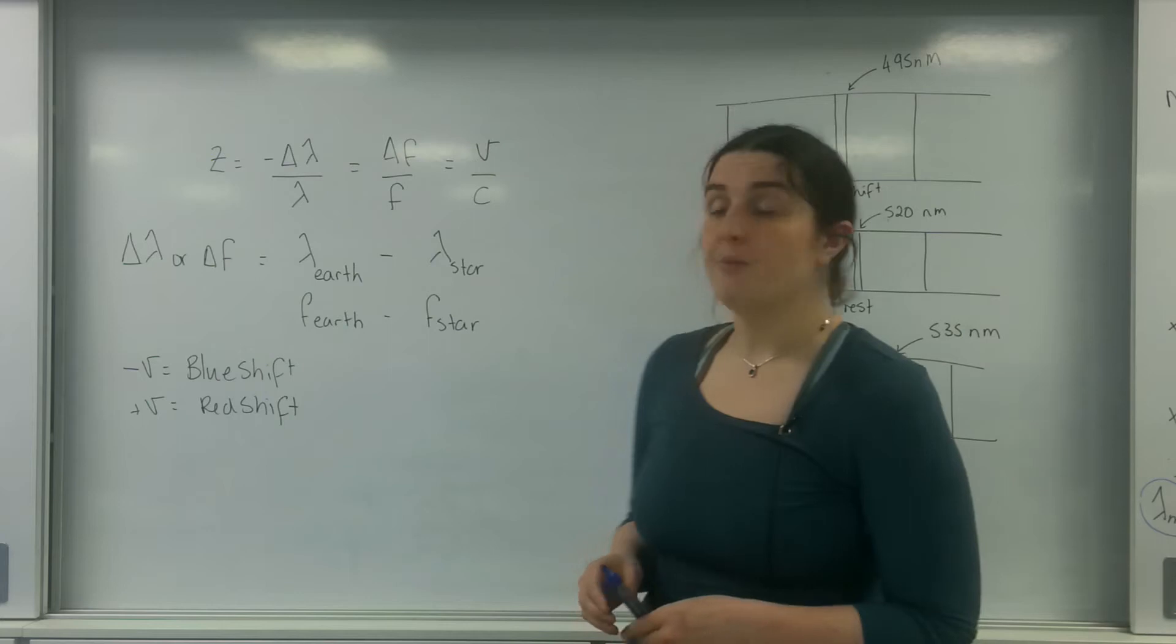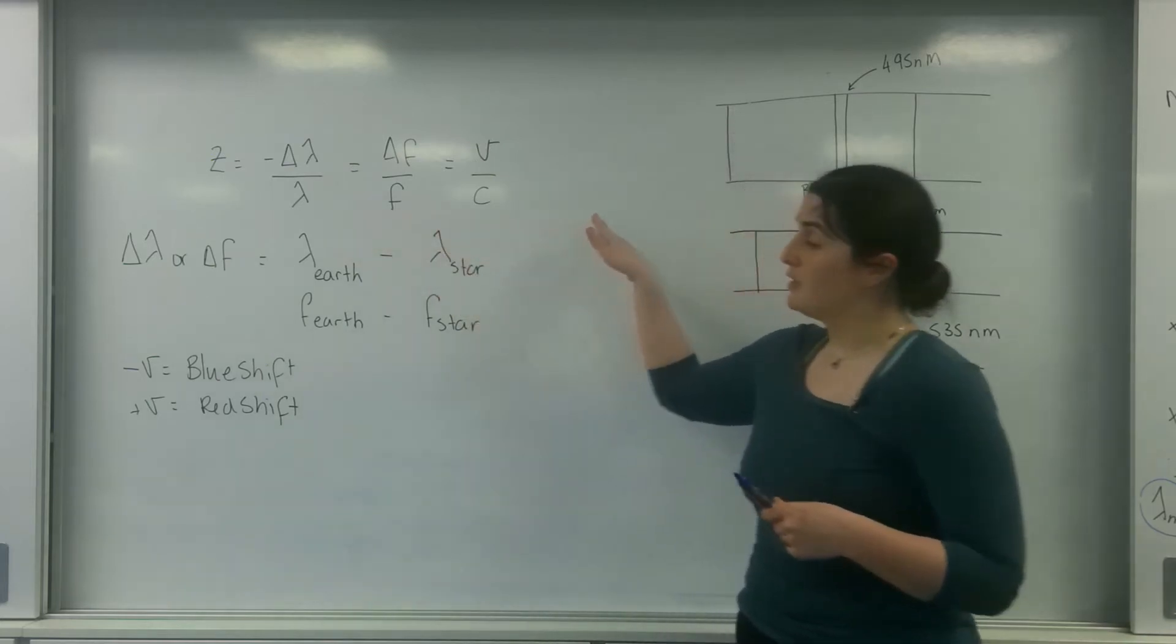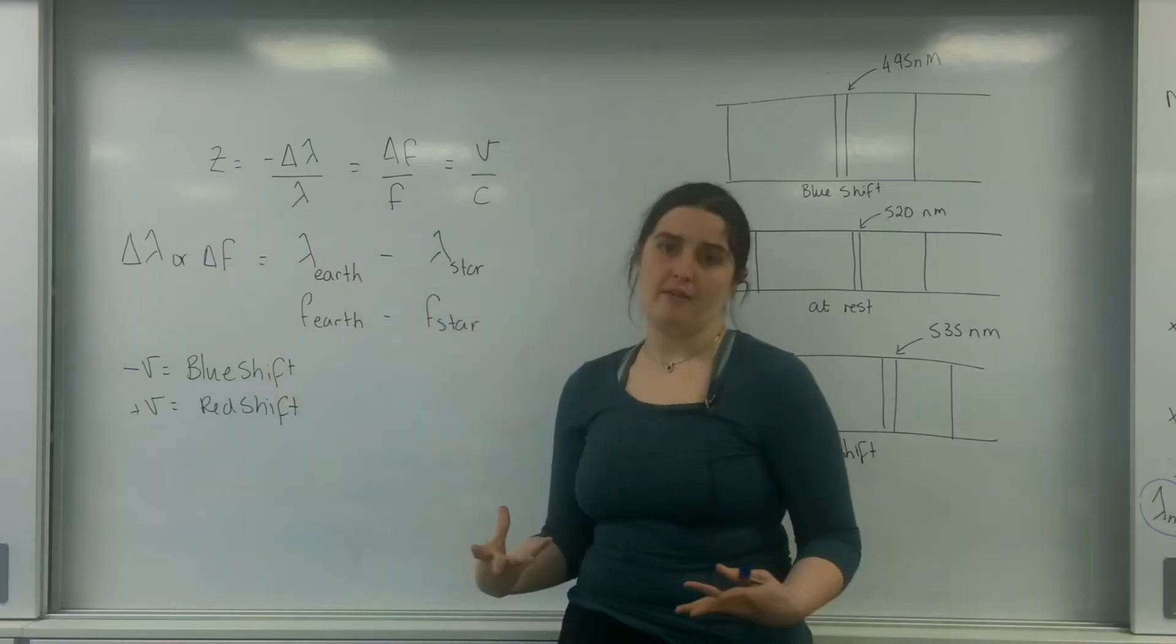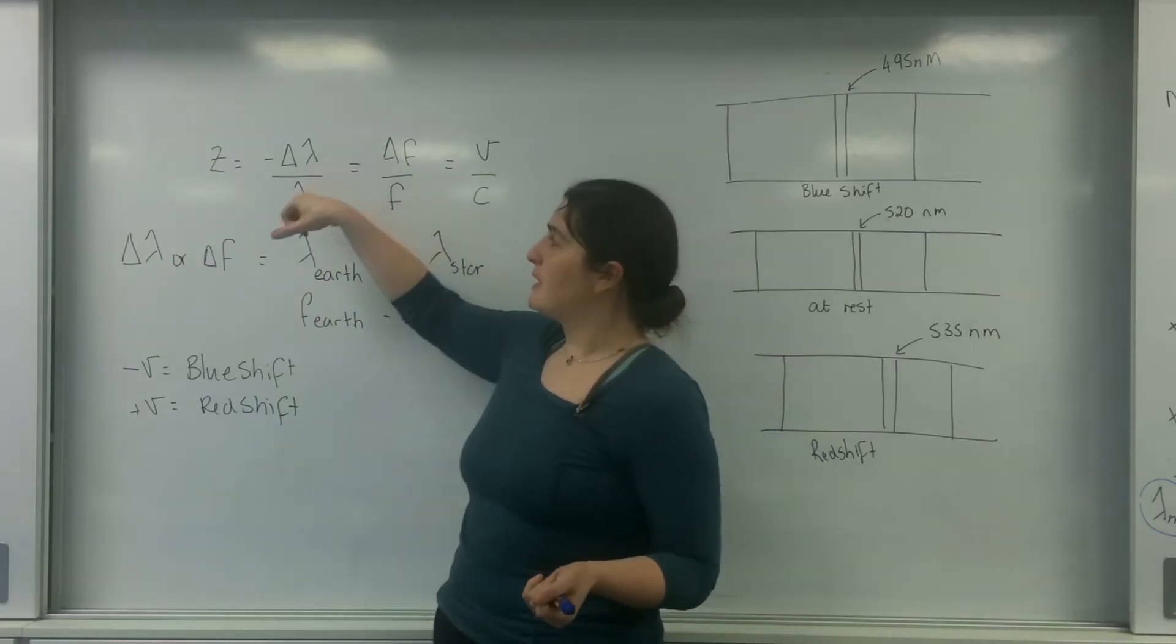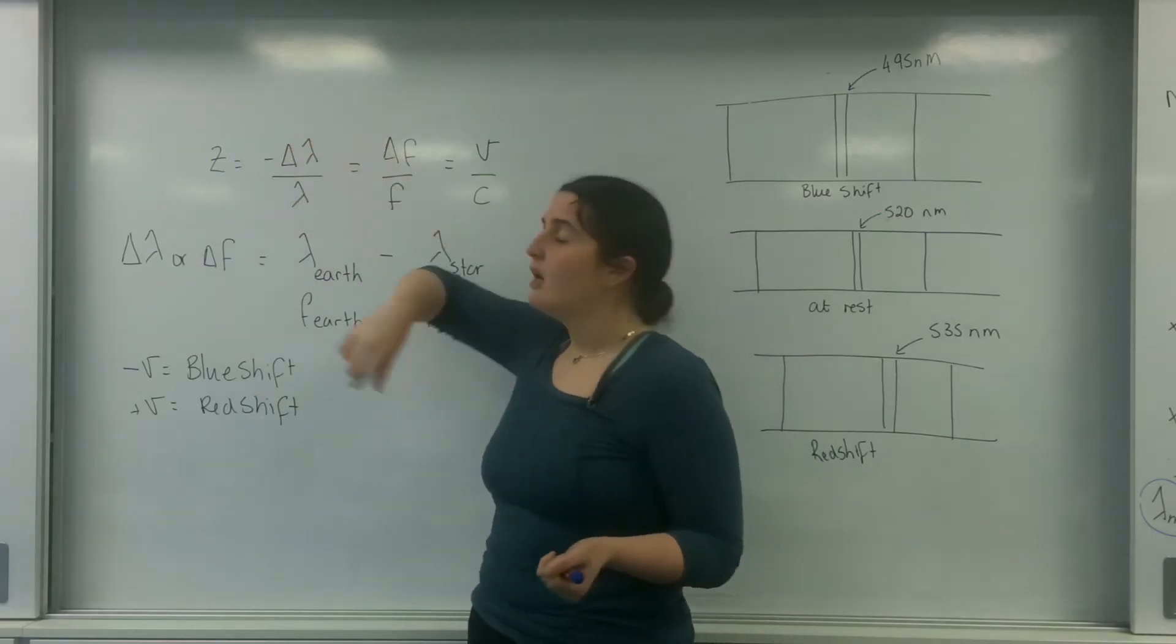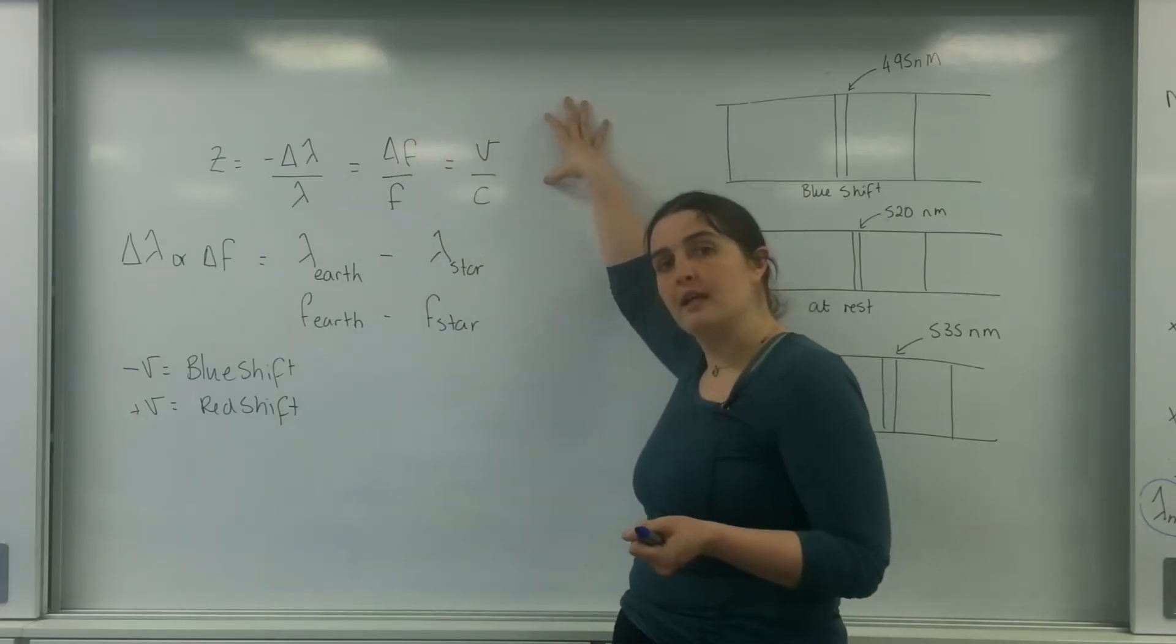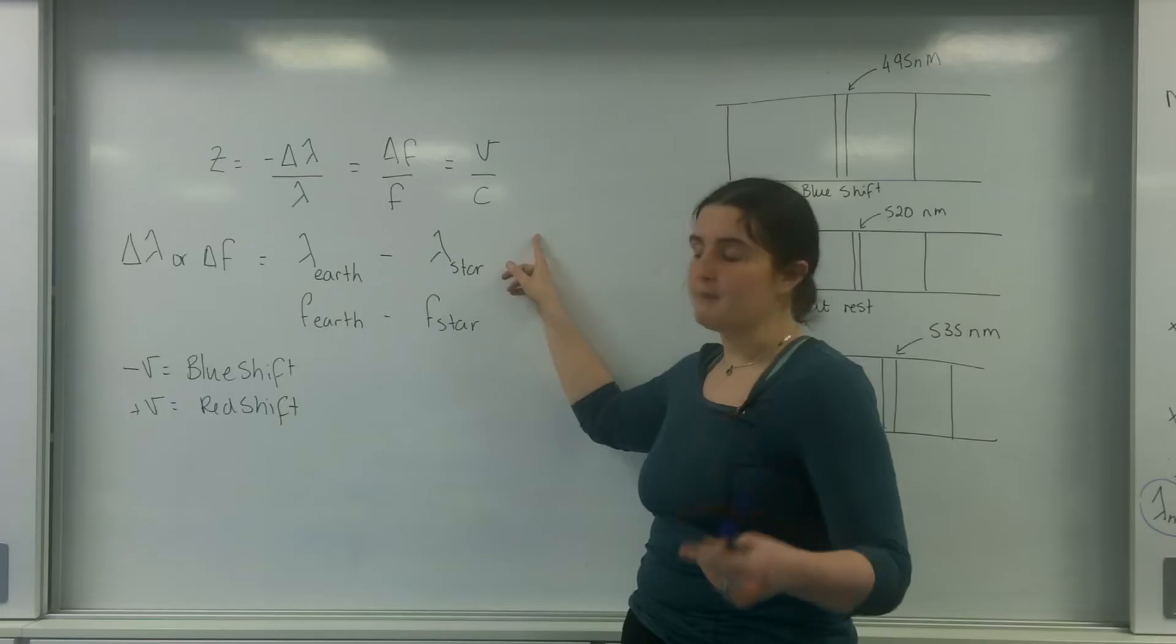This is the formula that is on your data sheet. We have a letter Z. And this represents the Doppler shift. And we can represent it by looking at the wavelength, the frequency, or the ratio between how fast the object is moving compared to the light that's being emitted.